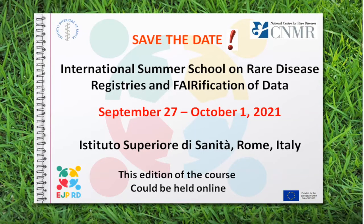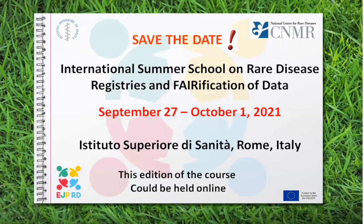The International Summer School of Rare Disease Registries and Verification of Data is part of the training activities of the Work Packages on Data Management and Quality Training of the EJP-RD. This course is made up of five days organized by ISS in close collaboration with EJP-RD partners.